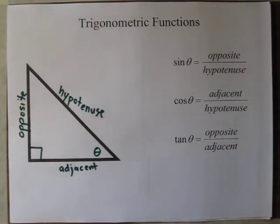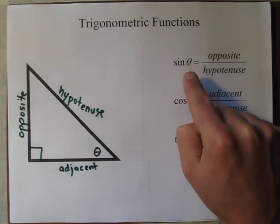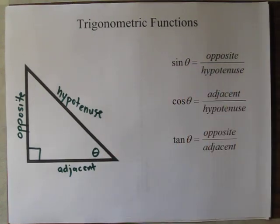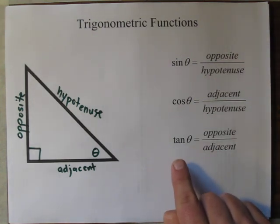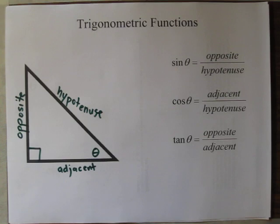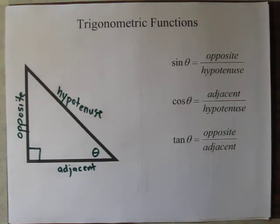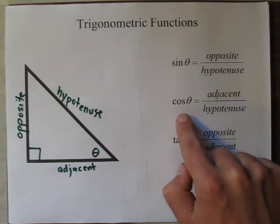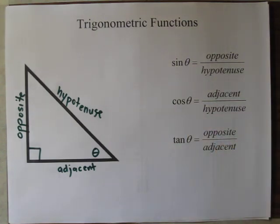Here are the first three trigonometric functions. If you plug in whatever angle theta is into the sine function, it gives you the ratio of the opposite over hypotenuse. Plugging it into the tangent function gives you the ratio of the opposite over adjacent side. And finally, plugging it into the cosine function gives you the ratio of the adjacent over the hypotenuse.